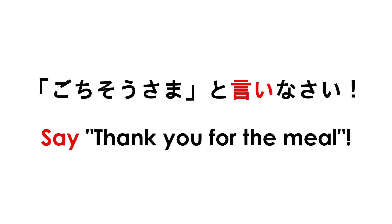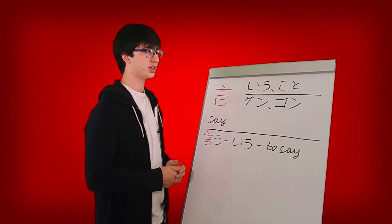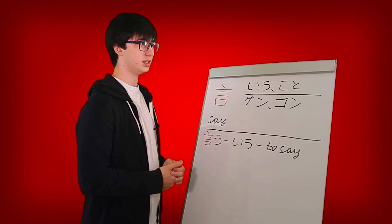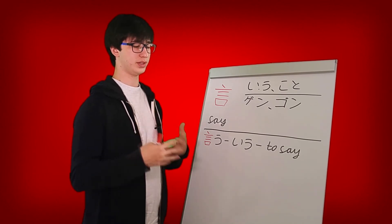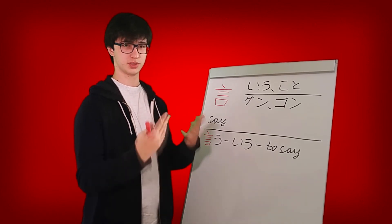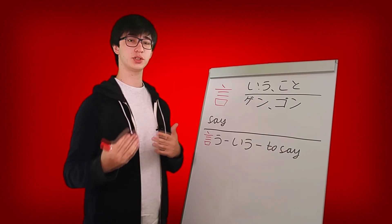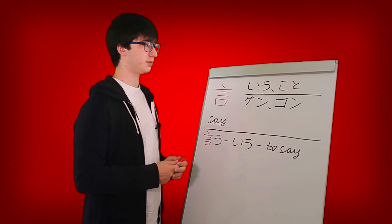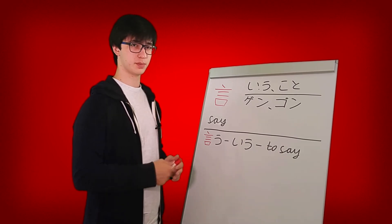So the first example will be gochiso samato ii nasai which means say thank you for the meal which is something that a parent might say to their child. Ii nasai is like a way to speak down onto your children or if you're a teacher you can use this construction to speak to your students. I even covered one example with this construction in a previous episode.